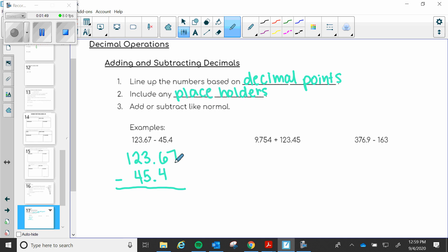Include any placeholders. So placeholders are zeros that just hold the place of a number. In this case our top number 123.67 has an extra digit right here that we don't have down here. So what you would do is add a zero and that's it. If it were opposite and my bottom number had a number but this one did not, then you would put the zero up here. You're just holding the place so you have something to subtract.